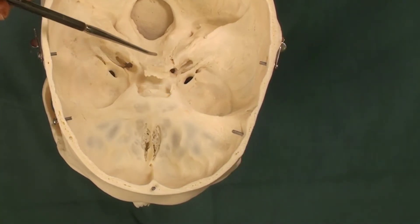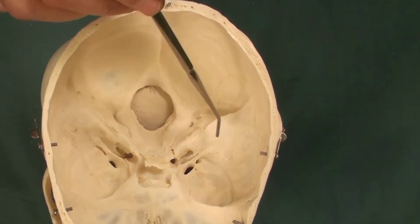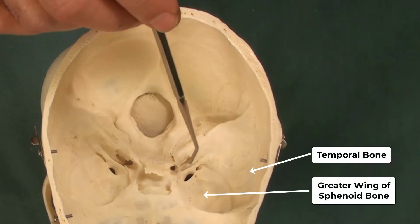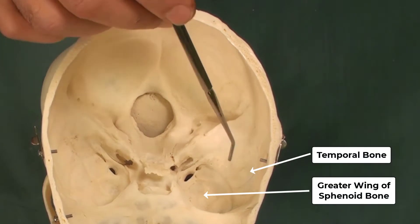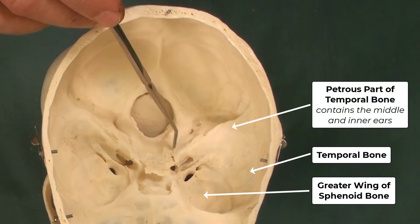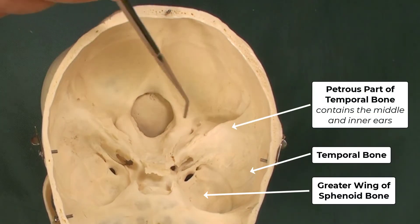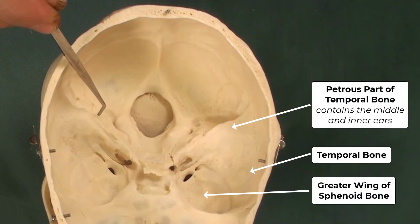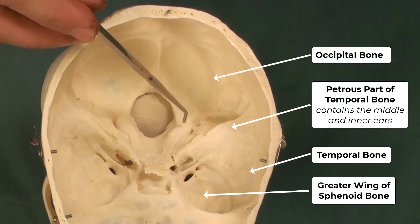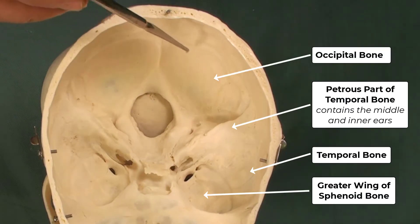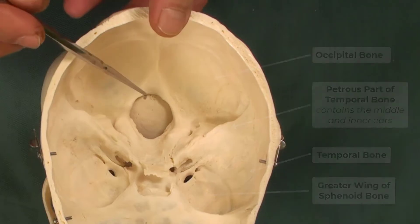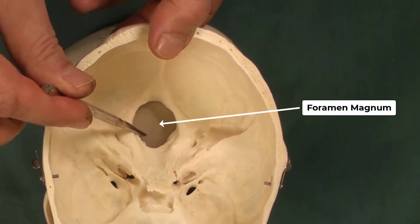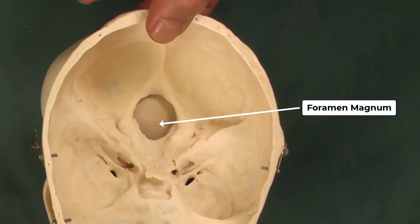Moving backward, on the sides we have the temporal bone, specifically the petrous part of the temporal bone. Then we have the occipital bone at the back, and as you can see here is the foramen magnum inside the occipital bone.